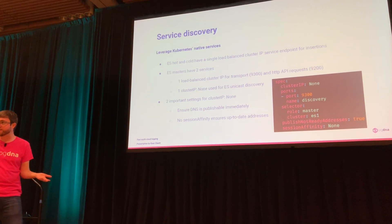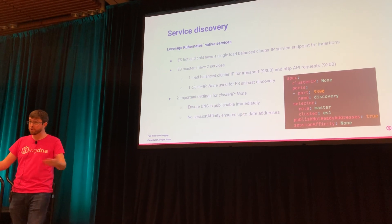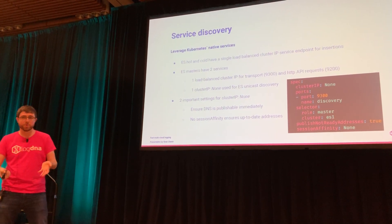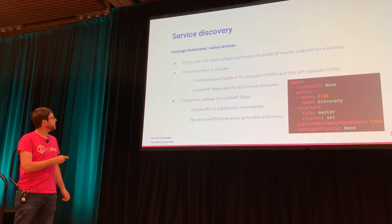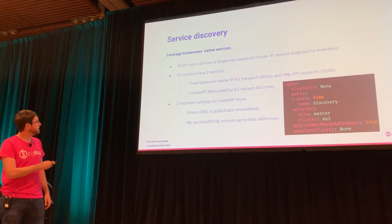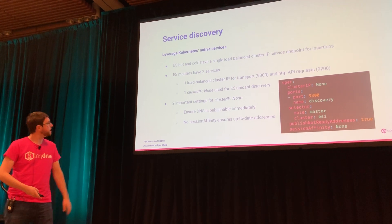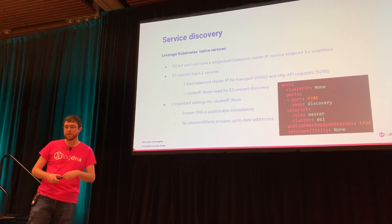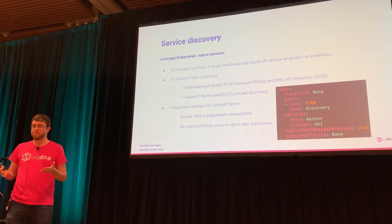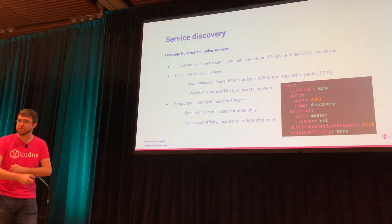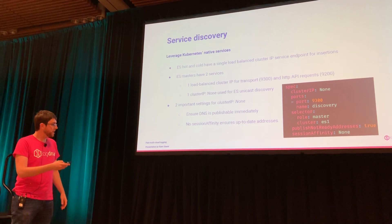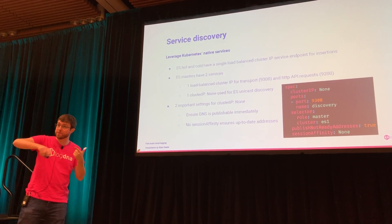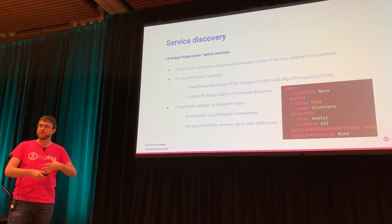Once you have your actual pods able to launch, they need to discover each other and talk — you need pod A to be able to talk to pod B. ES hot and cold nodes end up having a single load-balanced cluster IP service endpoint. ES masters are really important: because they hold an election, they need to discover each other. You need one load-balanced cluster IP endpoint for handling transport and API requests, and one headless cluster IP none service for ES unicast discovery. Cluster IP none as a service with Kubernetes allows you to list all available IP addresses for the pods in that group, so instead of being one load-balanced endpoint, you get as many addresses as you have masters and they can discover each other.